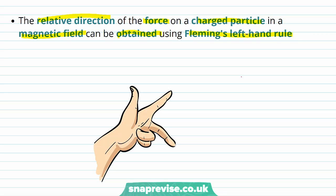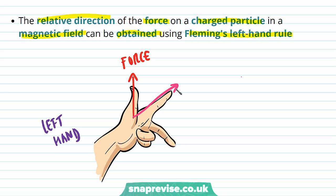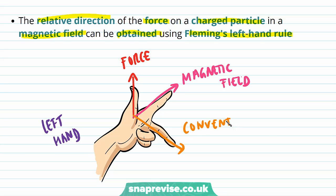So if we take our left hand and extend the thumb and the first two fingers, the force is going to point in the same direction as the thumb, the magnetic field in the same direction as the first finger, and finally the conventional current is going to point in the direction of the second finger. Recall that conventional current is the direction of positive charge flow, so we can also call the second finger the direction of motion of a positive charge.